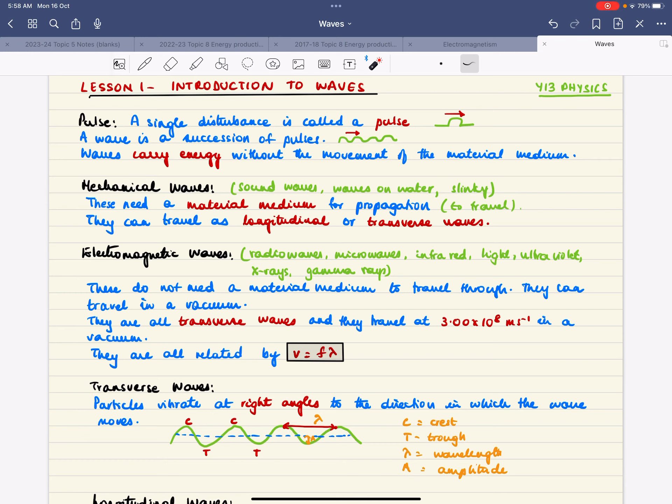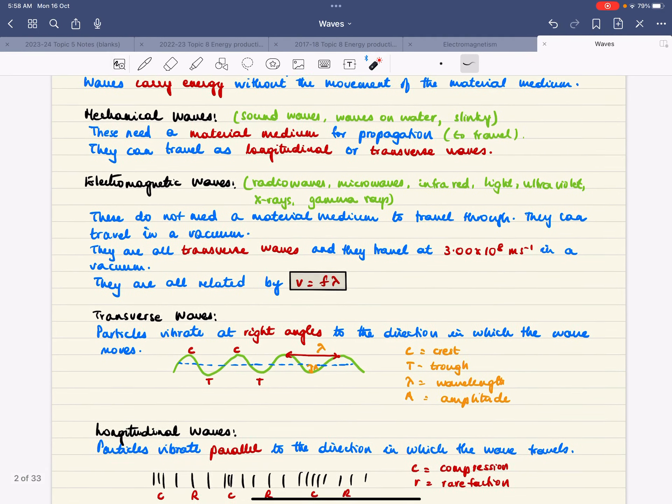All electromagnetic waves are transverse waves and they all travel with the same speed in a vacuum, and that is 3 times 10 to the power of 8 meters per second. And they're all related by the formula, the wave equation, v equals f lambda.